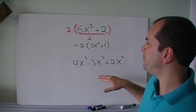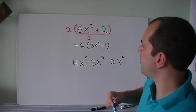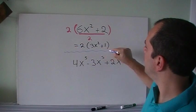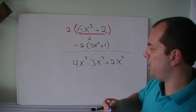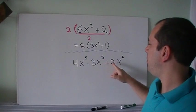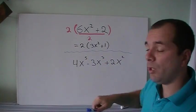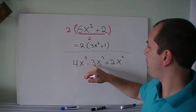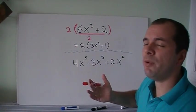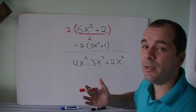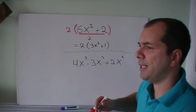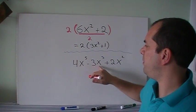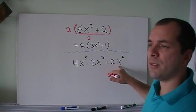If we look at this one, we got 4x to the power of 5 minus 3x to the power of 3 plus 2x squared. Let's look at the numbers first: 4, 3, and 2. The only number that goes into 4, 3, and 2 is 1, and that's just not necessary for us. So let's look at the variables. I got x to the power of 5, x to the power of 3, and x squared.